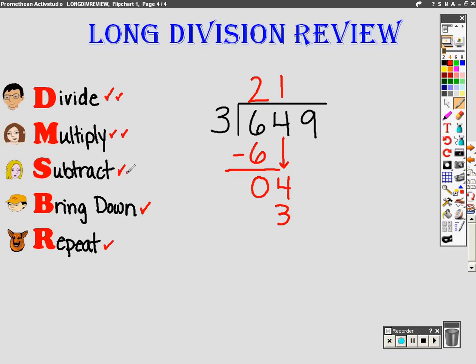Now we subtract. Four minus three is, that's right, one. Now we bring down the nine straight down, and we get nineteen.